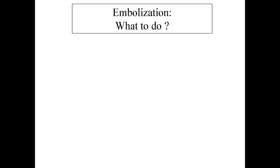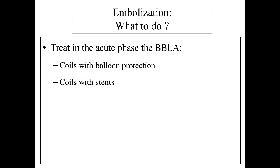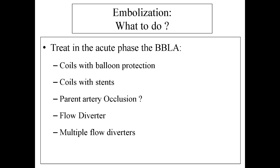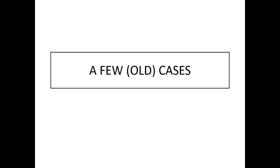Regarding embolization options: we can coil with balloon protection, coil with stent, use parent artery occlusion, flow diverter, multiple flow diverters, or perhaps wait and see — and if the aneurysm grows, treat. These are old cases from before flow diverters were available, so bear that in mind.